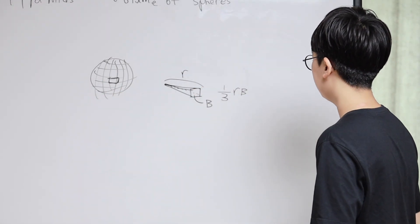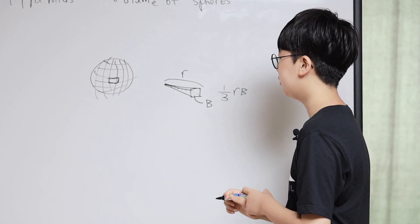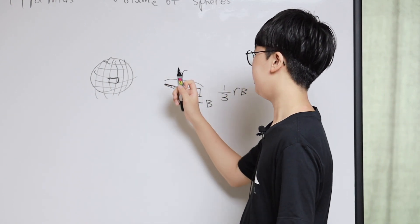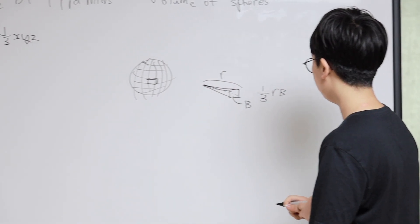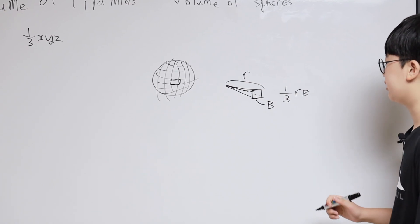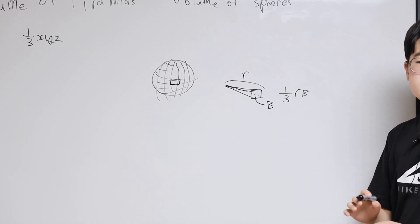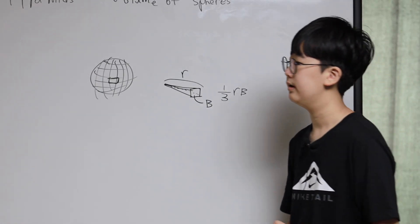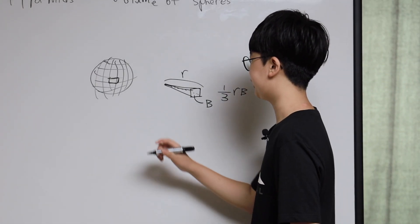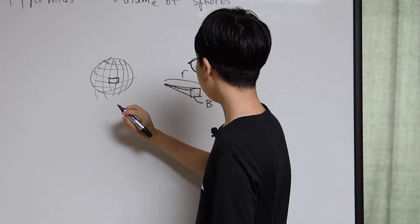To get the full volume of the sphere, we are going to have to add all of the pyramids. We are going to get an equation like this.